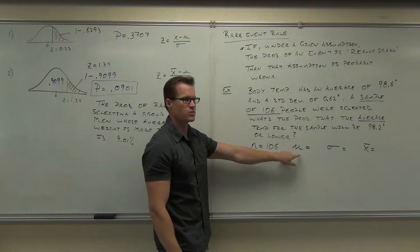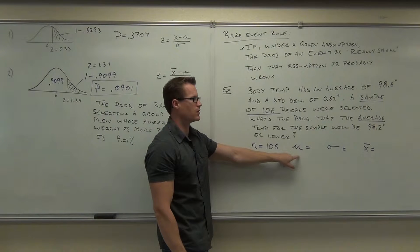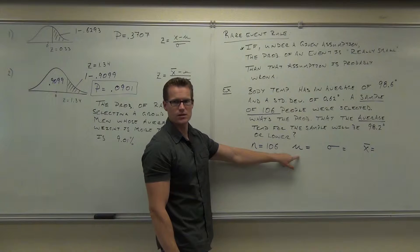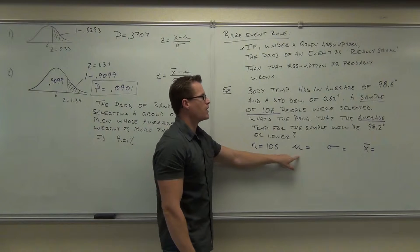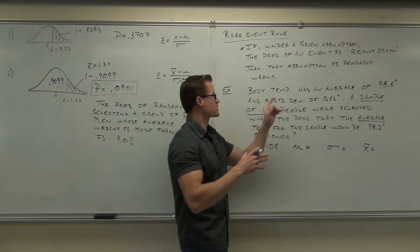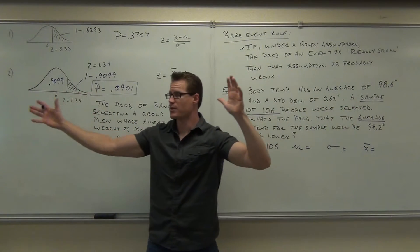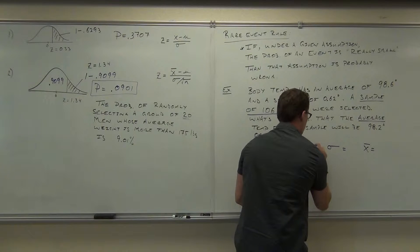What's the mu? The mu should be the population. What is that one? 98.2 or 98.6? Okay. The 98.6, that's for everybody, right? That says body temperature has an average of. That means everything. That's the whole population. So yeah, this one's going to be 98.6.